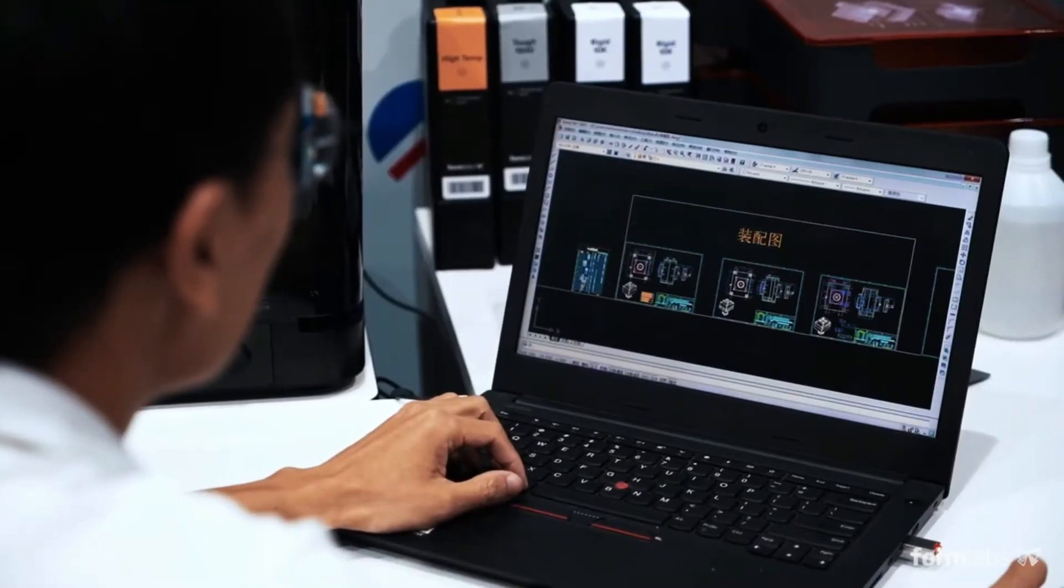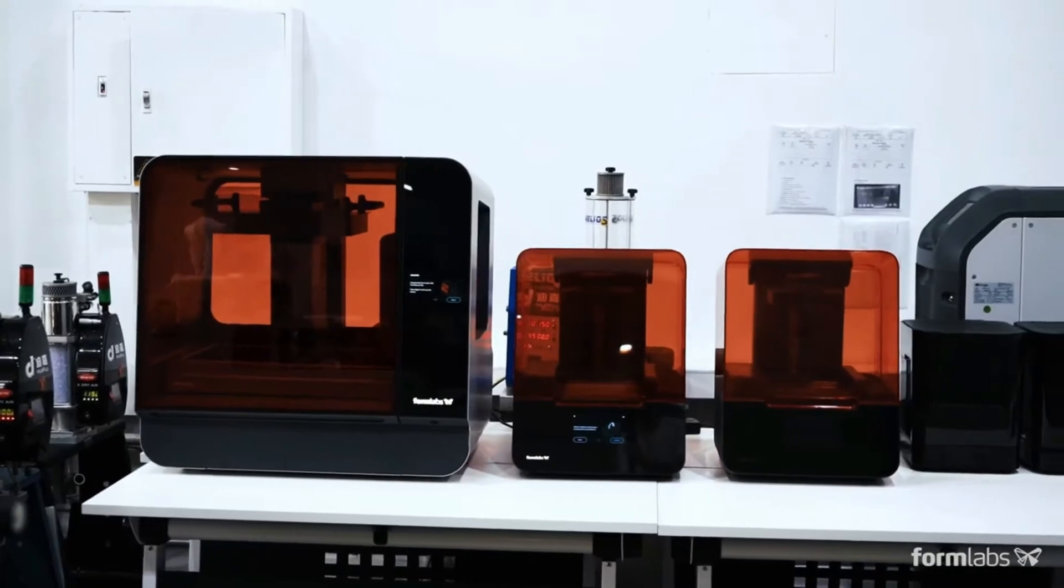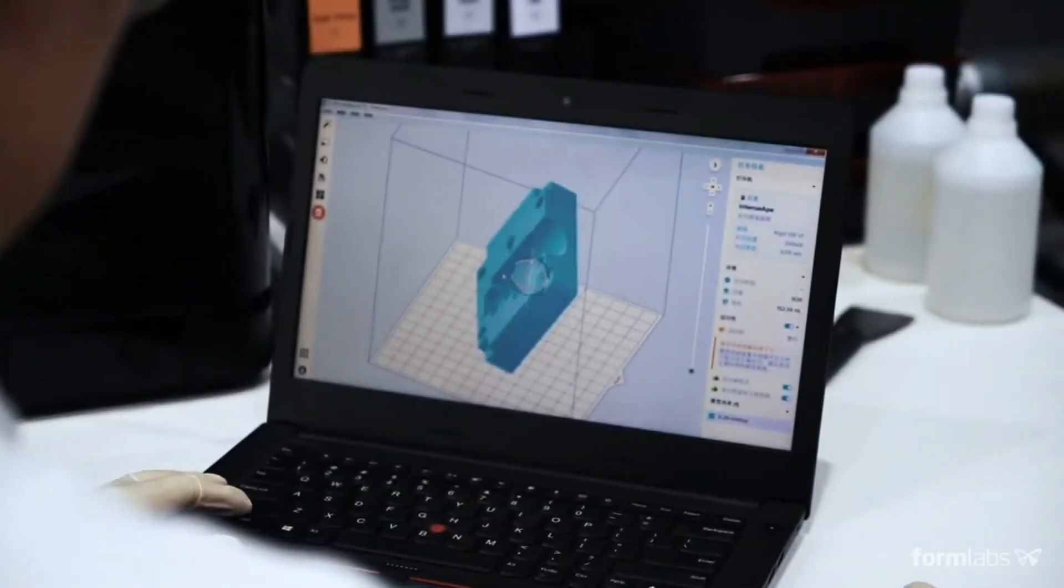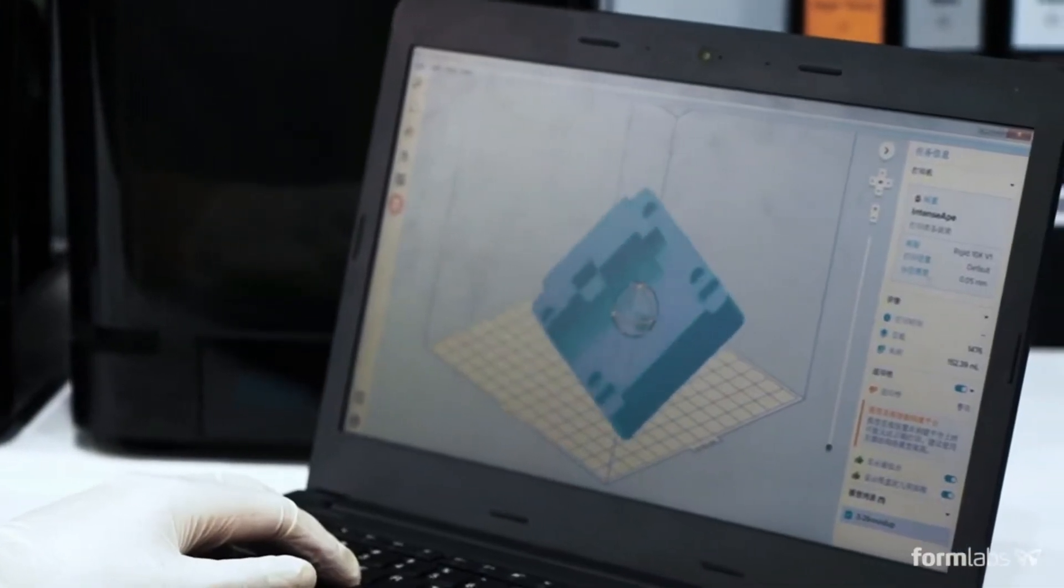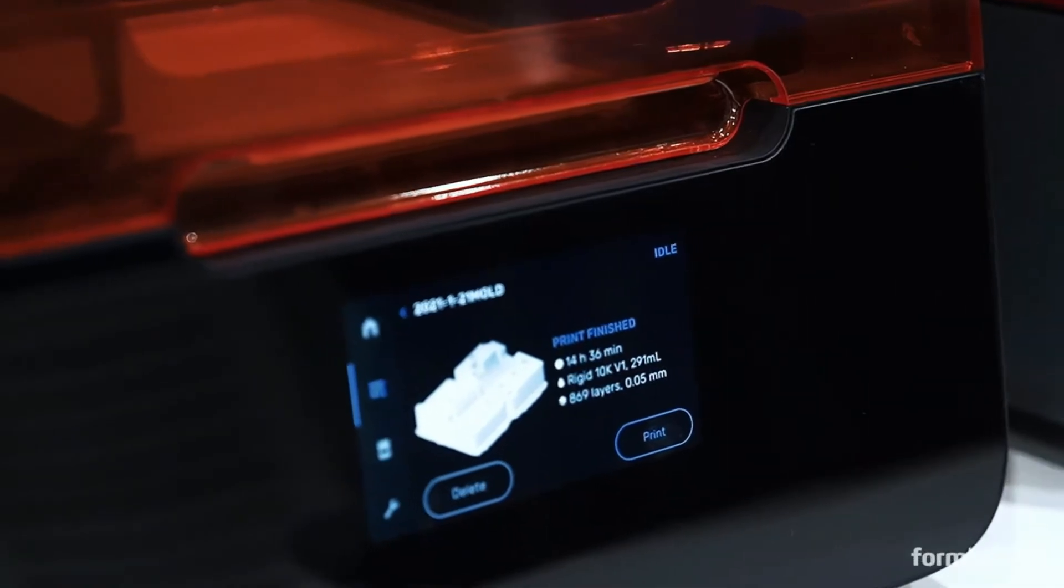Begin by designing the mold using common design for manufacturing principles. 3D printed molds can incorporate the same components as metal molds. Upload your design into Preform, Formlabs print preparation software. Prepare your print and send it to the Formlabs 3D printer.